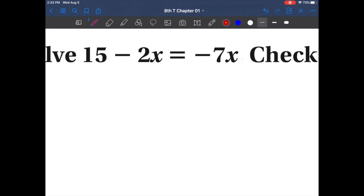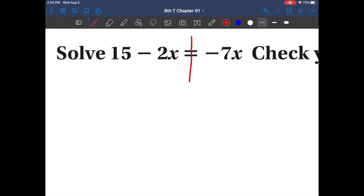First things first, let's draw our line and make sure we know which side is which. Now we want to combine like terms. My first question is, can we combine these two together? No, the reason why is because that 15 does not have an x, so that means they are not the same term.